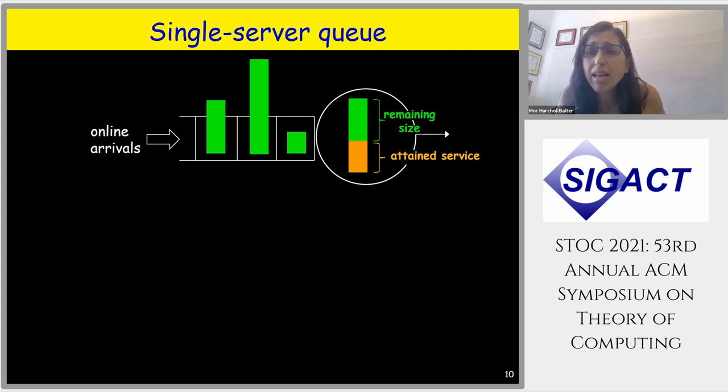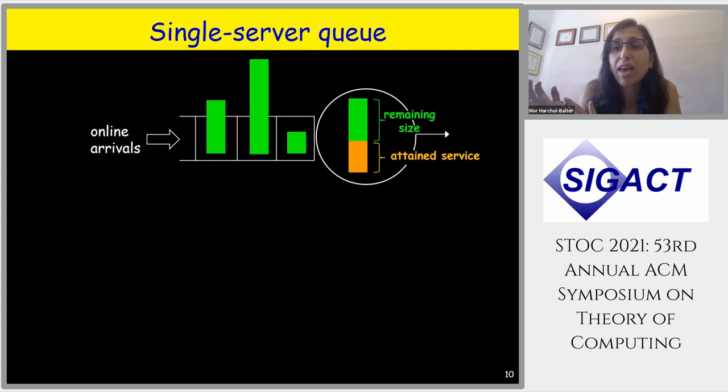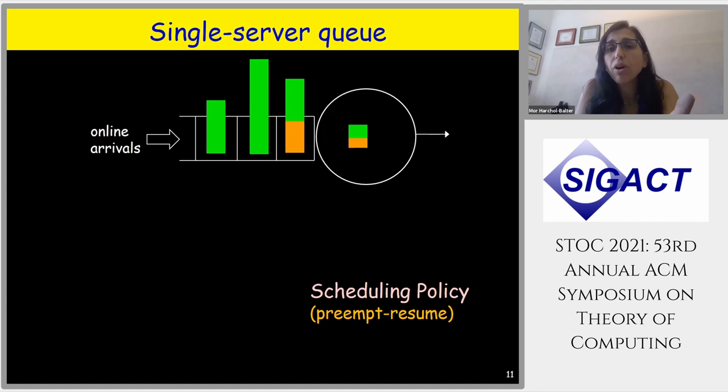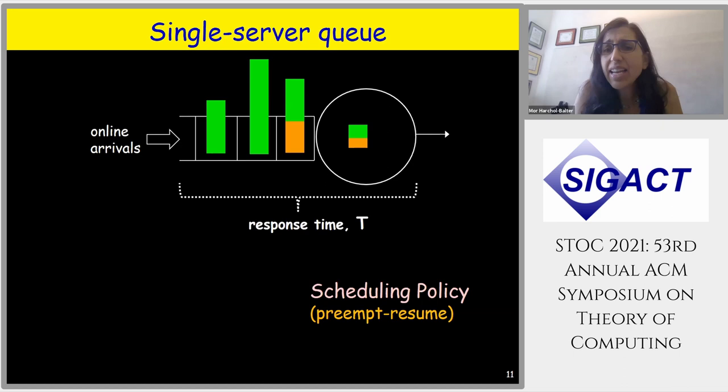At any point in time, a scheduling policy decides which job to run — they don't have to happen in first-come first-served order. The scheduling policy can preempt and swap to another job, and the policy is preempt-resume, meaning you don't lose anything by switching.